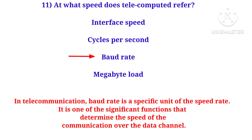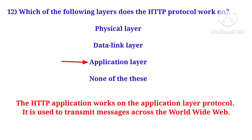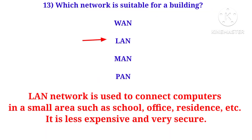Next question: at what speed does telecomputing refer? The answer is baud rate. Baud rate determines the speed over the communication data channel. Next: which of the following layers does the HTTP protocol work in? HTTP works at the application layer of the OSI model.